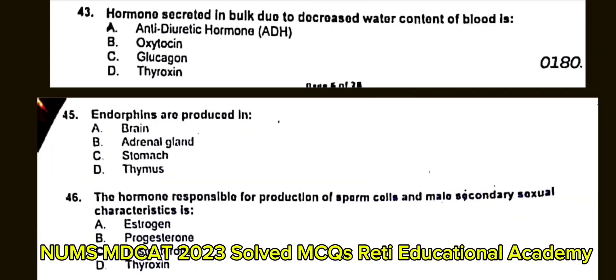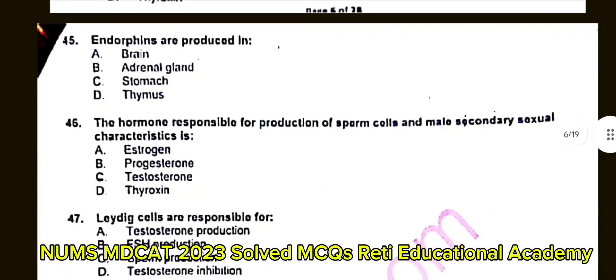Question number 45: Endorphins are produced in? A. Brain. B. Adrenal gland. C. Stomach. D. Thymus. The correct answer is A: Brain.